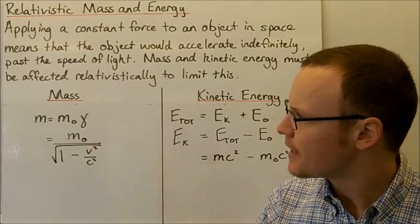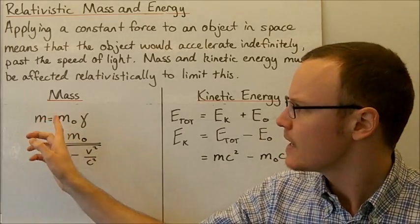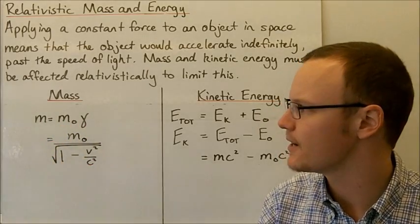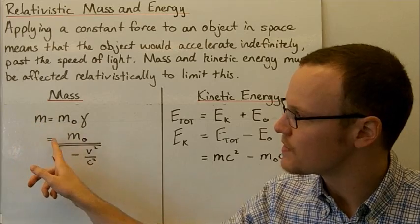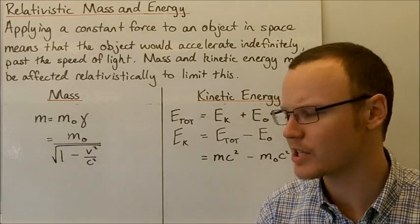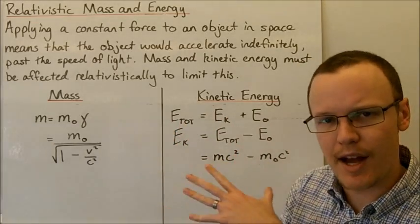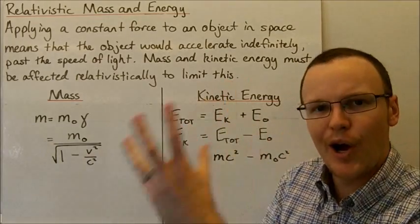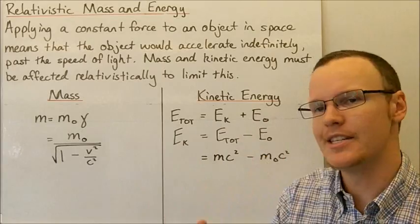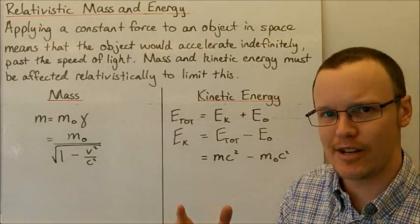The way mass is limited is through the Lorentz factor, such that M, the relativistic mass, is equal to the rest mass M₀ multiplied by the Lorentz factor. So the relativistic mass equals the rest mass divided by the square root of 1 minus the velocity squared divided by the speed of light squared. Kinetic energy is affected as well, such that the total energy any object can possess is the combination of whatever kinetic energy it has plus any rest energy it has.